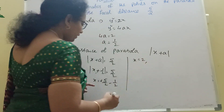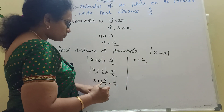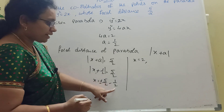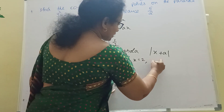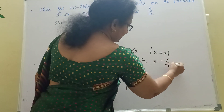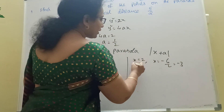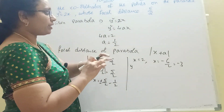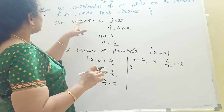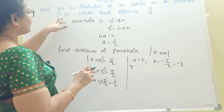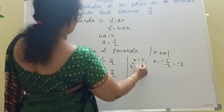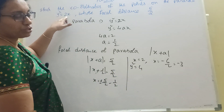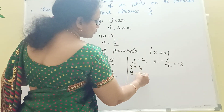x = 2. Now substituting x = 2 into y² = 4ax: y² = 4·(1/2)·2 = 4, so y = ±2. Therefore the coordinates are (2, +2) and (2, −2).